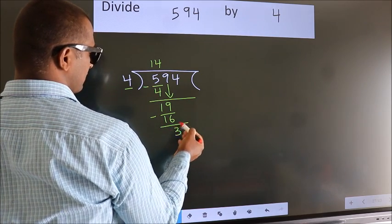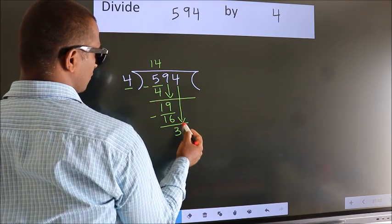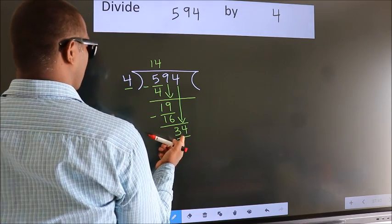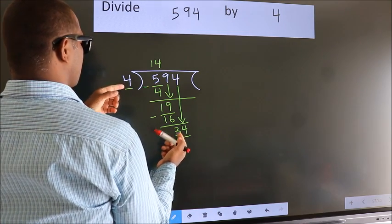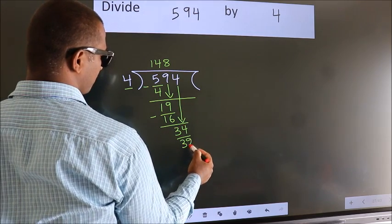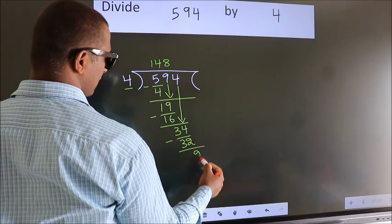After this, bring down the beside number, so 4 down, so 34. A number close to 34 in the 4 table is 4 eights, 32. Now we subtract, we get 2.